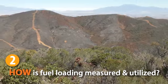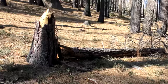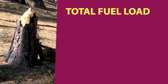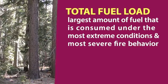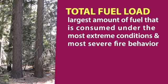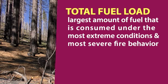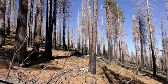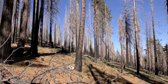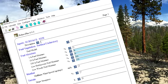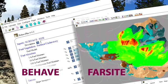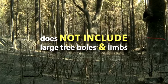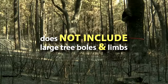Each measurement provides insight into particular types of fire behavior. Total fuel load is a measure of the largest amount of fuel that can be consumed in a fire burning under the most extreme conditions and with the most severe fire behavior. It can estimate the potential severity of a fire and was part of one of the earliest fire behavior calculations. Now this value is more often used to predict fire behavior under less severe circumstances when incorporated into fire behavior modeling systems such as BEHAVE and FARSIGHT. Although it sounds like a measure of total biomass, total fuel load does not include large tree boles and limbs, since these are not consumed even in fires of extreme intensity and severity.